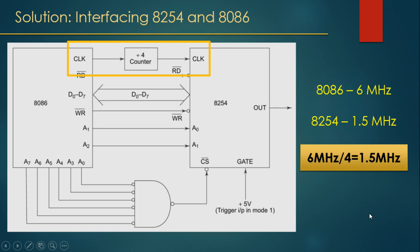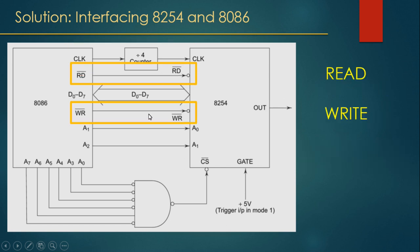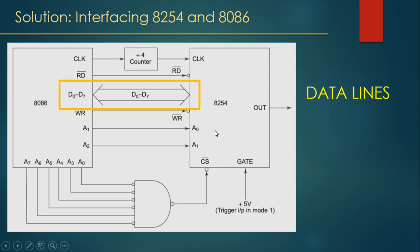Now let's understand the hardware interfacing between 8086 and 8254. The 8086 runs at 6 MHz and 8254 at 1.5 MHz, so a divide-by-4 circuit connects the 8086 clock to 8254. The RD and WR bar signals are connected directly to 8254. Data lines D0 to D7 are connected to the data lines of 8254.